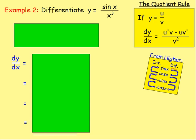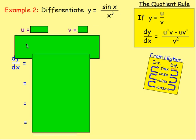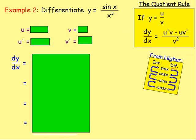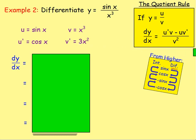Example 2: differentiate y equals sin x over x cubed. Again, it's the quotient rule because we've got one function in terms of x divided by another function in terms of x. So we write down u and v: u is sin x (at the top), v is x cubed (at the bottom). u' is the derivative of sin x — remember: sin, cos, negative sin, negative cos — so u' equals cos x. v' is the derivative of x cubed, which gives us 3x squared. dy/dx using the quotient rule: u'v minus uv' over v squared, so cos x times x³, minus sin x times 3x², all divided by x³ all squared.